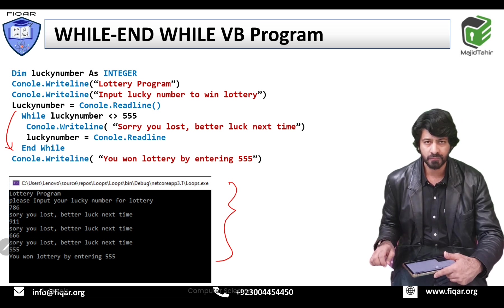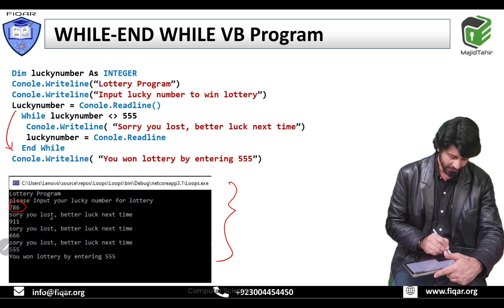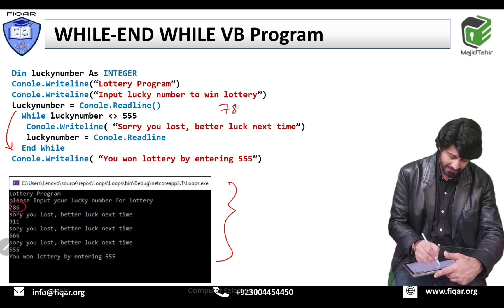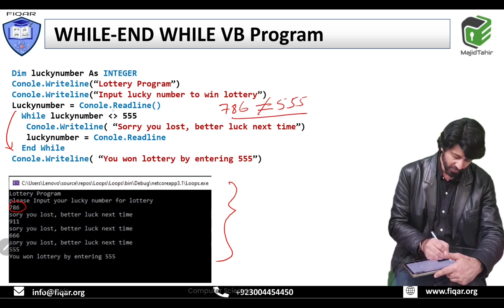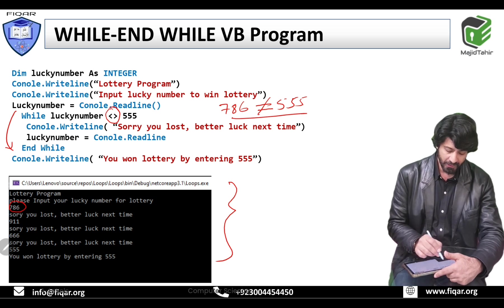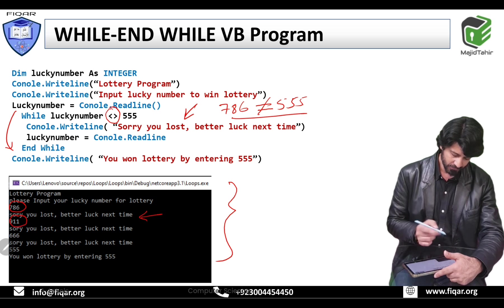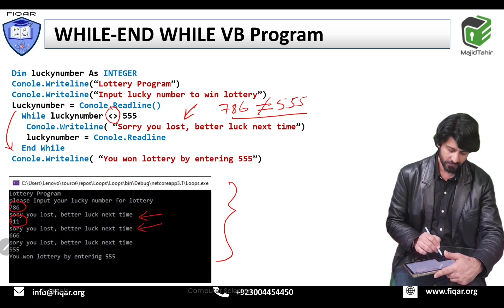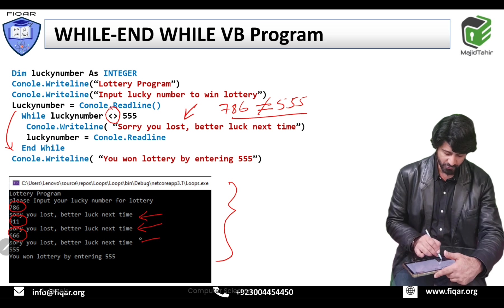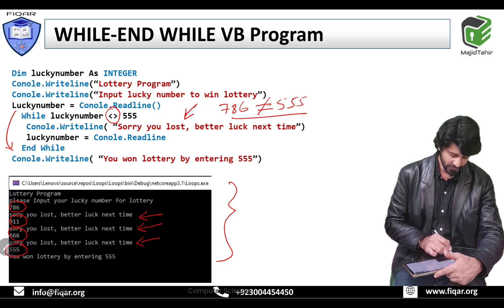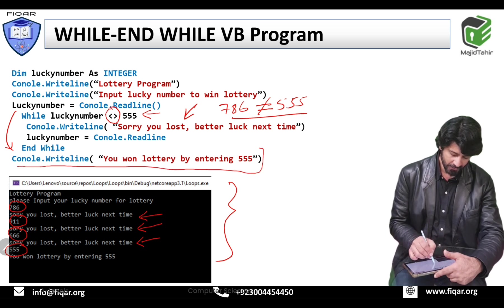If you run this code, first time you input 786 — because 786 is not equal to 555 (not equal to sign), the condition is true and the loop runs, printing sorry, better luck next time. The user enters another number — loop runs again. User enters 666 — 666 is not equal to 555, so loop works. Then user enters 555 — now the condition is false, so it exits the loop and displays the winning line.